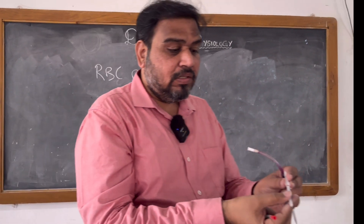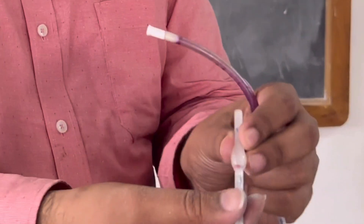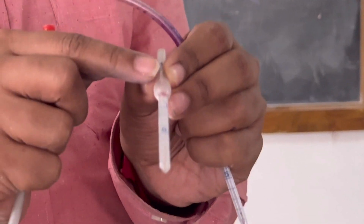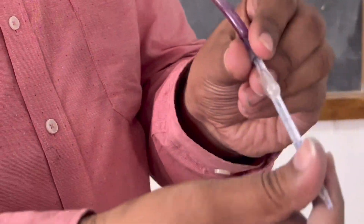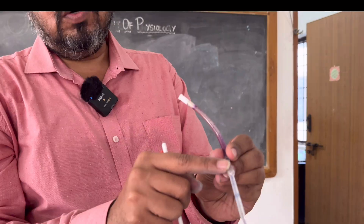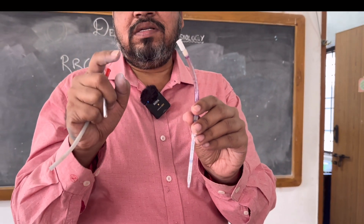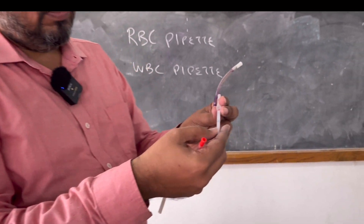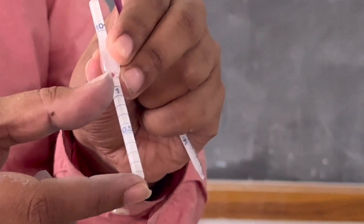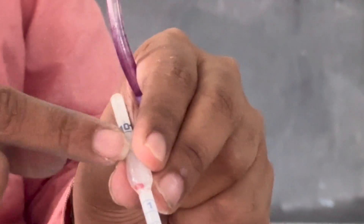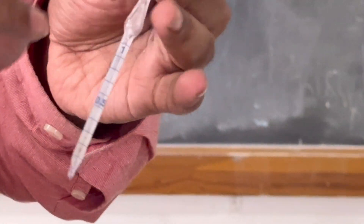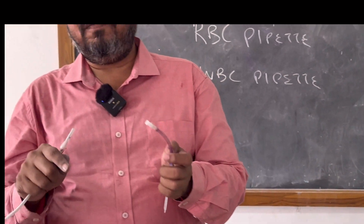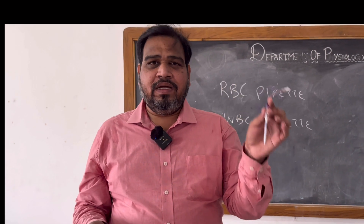This is very important. If you see here the RBC pipette, this part is called the bulb. Inside the bulb you are having a red color bead which is moving. So RBC pipette contains a red bead, and WBC pipette contains a white bead. Don't tell mouthpiece alone as the reason for identification. The bulb of RBC pipette has a red bead inside, and the bulb of WBC pipette has a white bead inside — that is why the name. The bead color corresponds to the respective pipette: red for RBC, white for WBC.